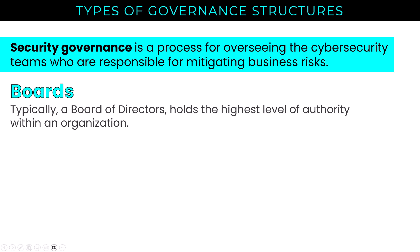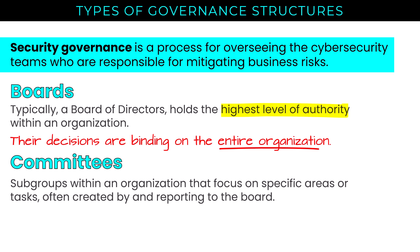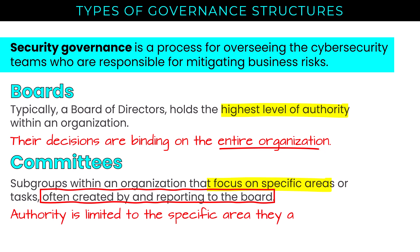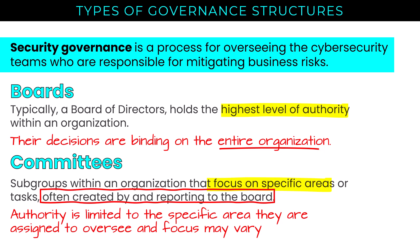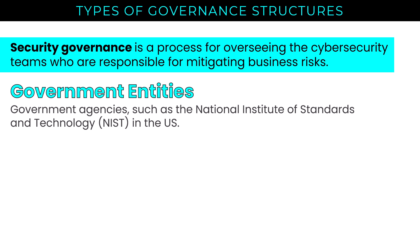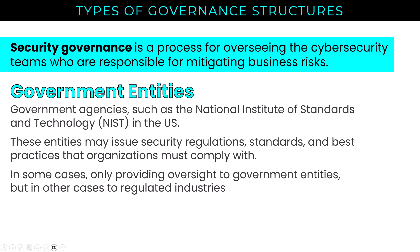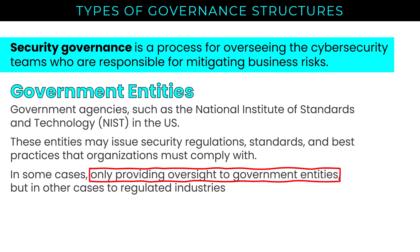A board — typically a board of directors — holds the highest level of authority within an organization. Their decisions are binding on the entire organization, company-wide. A committee, on the other hand, is a subgroup within an organization that focuses on specific areas or tasks assigned to them. Committees are often created by and report to the board of directors, and their authority is generally limited to the specific area they are assigned to oversee. Government entities such as NIST may issue security regulations, standards, and best practices that organizations must comply with, providing oversight to government entities or regulated industries.